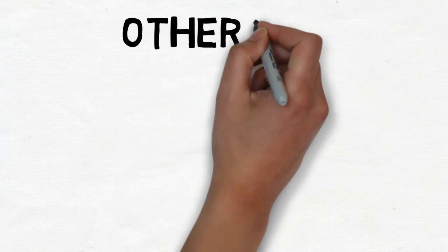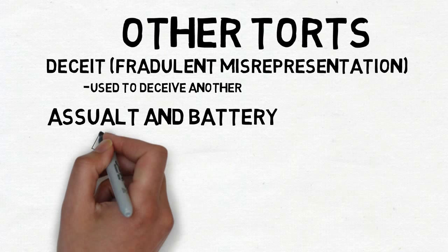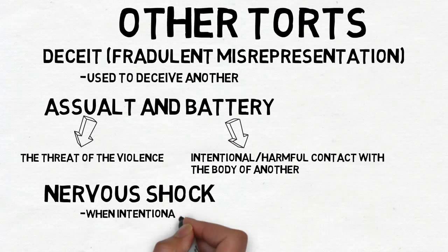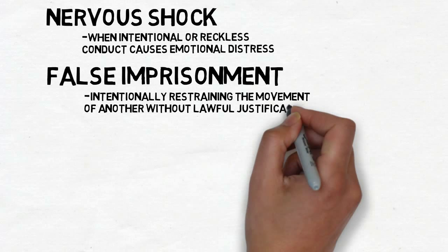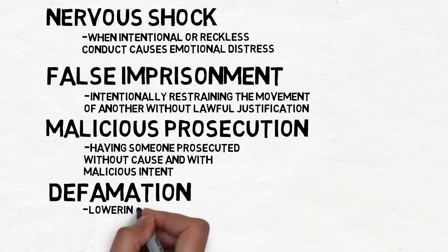Other torts. First, deceit or fraudulent misrepresentation — an action used to deceive another. Next, assault and battery: assault is the threat of violence, whereas battery is the actual intentional harmful contact with the body of another. Nervous shock — when intentional or reckless conduct causes emotional distress. False imprisonment — intentionally restraining the movement of another without lawful justification. Malicious prosecution — having someone prosecuted without cause and with malicious intent. Defamation — lowering a person's reputation in the eyes of right-thinking members of society.